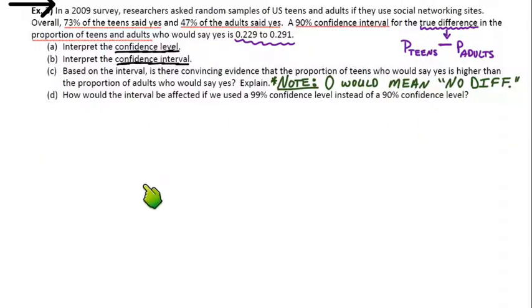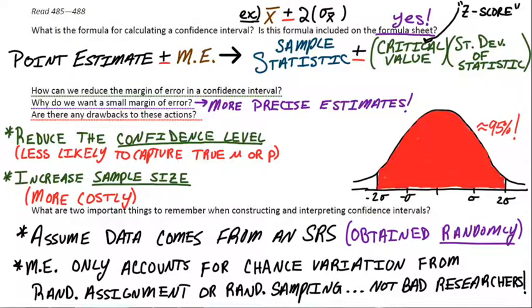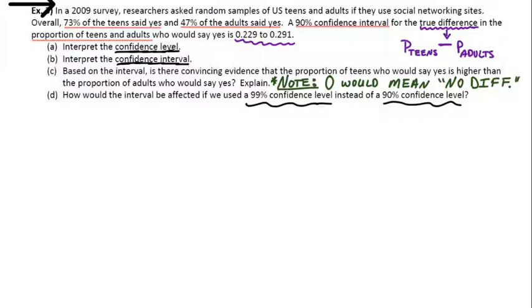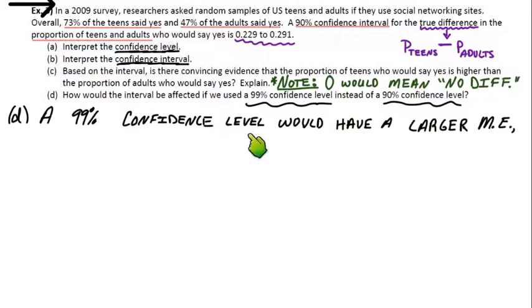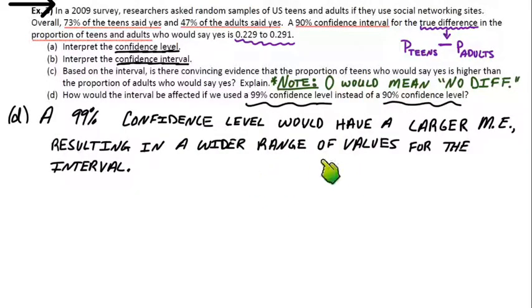And then part D is the last one here. How would the interval be affected if we used a 99% confidence level instead of a 90% confidence level? Well, if you think back to the normal curve for a second, remember two standard deviations on each side gave us 95%, so 99% would be even wider than this. It would have to shade even more of the curve. So, it seems like that should increase our margin of error. So, if we change it to be 99% confident, that's great, we're very confident, but it would definitely give us a larger margin of error. So, a 99% confidence level would have a larger ME, margin of error, which ultimately would result in a wider range of values for our confidence interval.